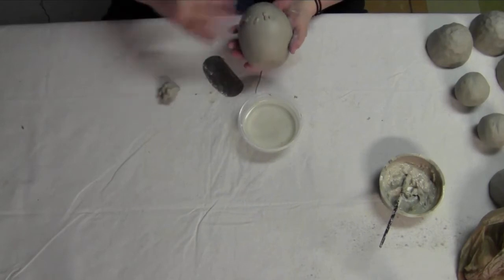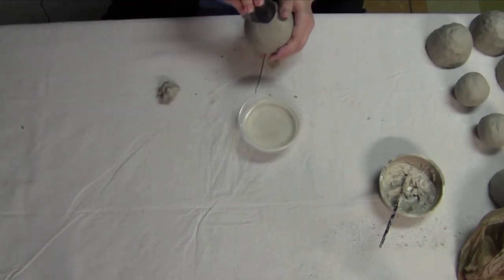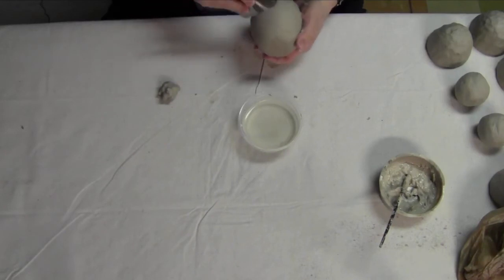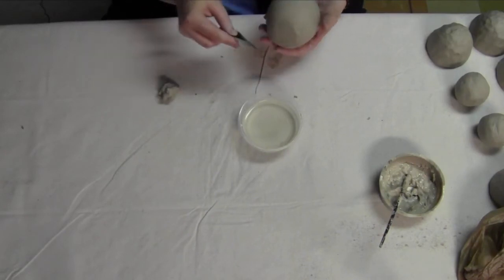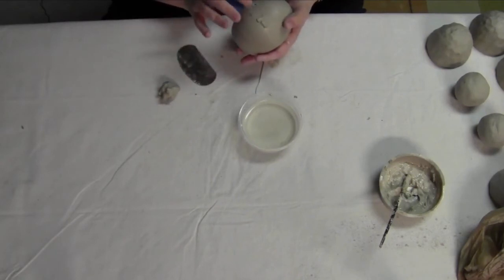And I would let it sit, let it cure a little bit before I went back and started smoothing. And maybe you can move on to another area. Sometimes if you try to smooth it out too soon, it just pulls that clay right back up out of that divot.